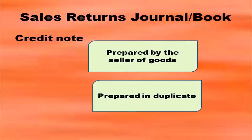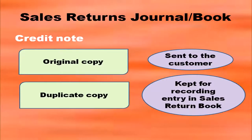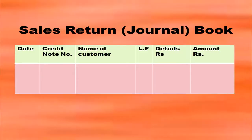When sales returns take place, you prepare a credit note, and it is prepared by the seller of goods. The credit note is prepared in duplicate: the original copy is sent to the customer (whose account is credited with this amount), and the duplicate copy is kept for recording the entry in the sales returns book. The format of the sales returns book has columns for date, credit note number, name of customer, ledger folio, details, and amount.